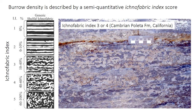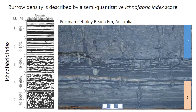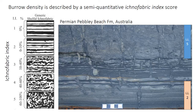Bioturbation intensity is measured by a semi-quantitative score called an ichnofabric index — a numerical scale from 1 to 5 where 1 means no burrowing and 5 means complete mixing, with 2, 3, and 4 as intermediate categories. The categorization is somewhat subjective. A Cambrian limestone shown here has an ichnofabric index of 3 or 4 by visual comparison. In some Permian siliciclastics, the lower layers show primary laminations with only a couple of burrows — ichnofabric index 2 — while the uppermost layer is completely homogenized and mixed, indicating an ichnofabric index of 5.